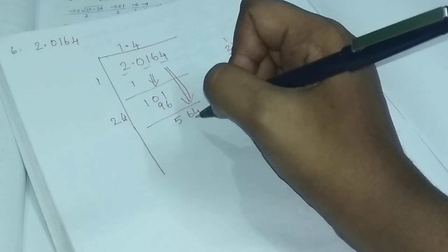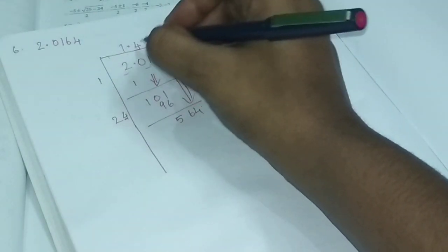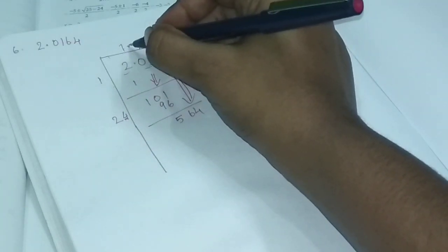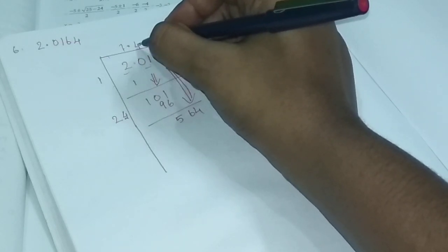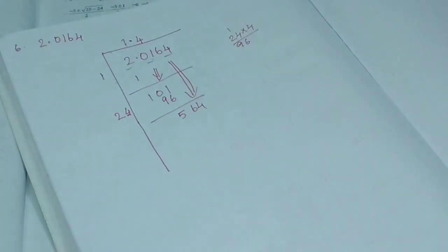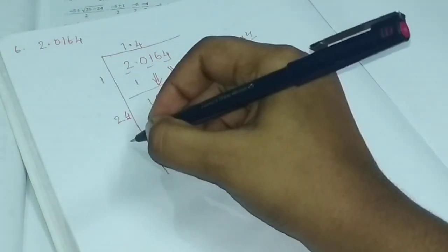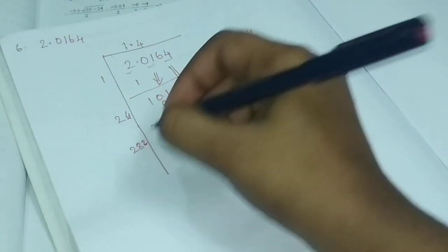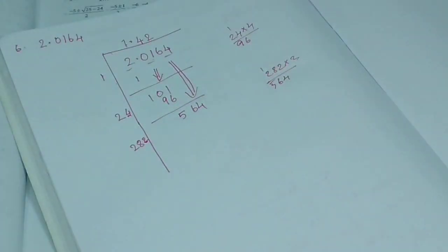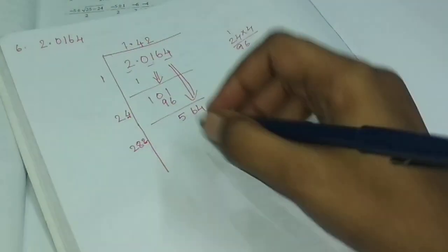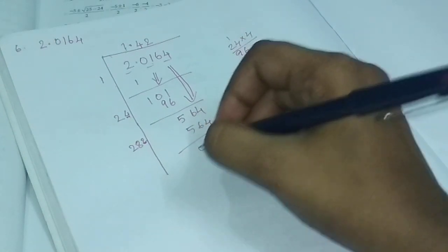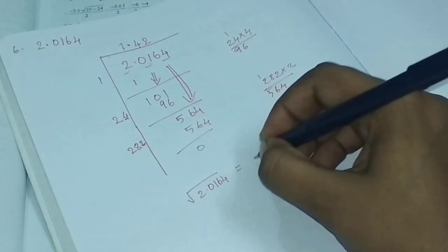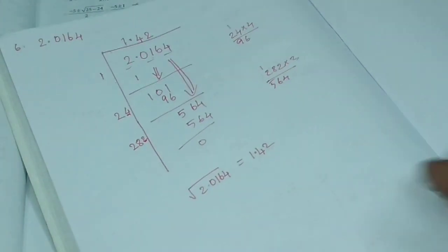And we will get the answer here. We will get the answer to this. We will get the decimal. Make the decimal. We will get the decimal. So 2 here, 2. And here 564. So the square root of 2.0164 is equal to 1.42.